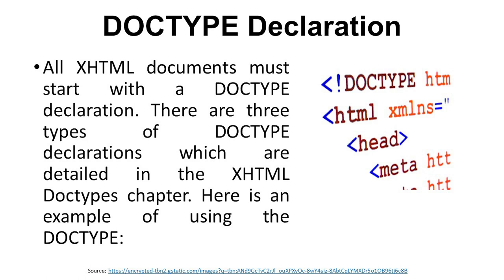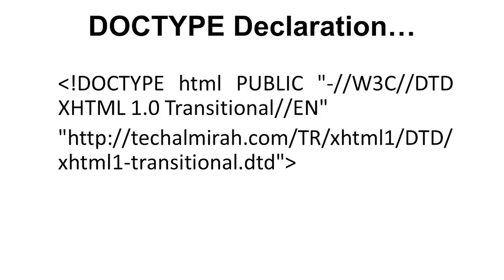Here is an example of using the DOCTYPE. The DOCTYPE declaration uses DOCTYPE HTML PUBLIC, then W3C, then transitional encoding, then HTTP. Using the example of techalmera.com, we then have DTD XHTML1 transitional.dtd.